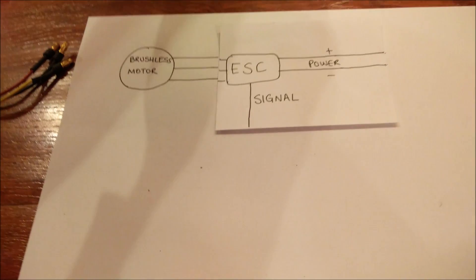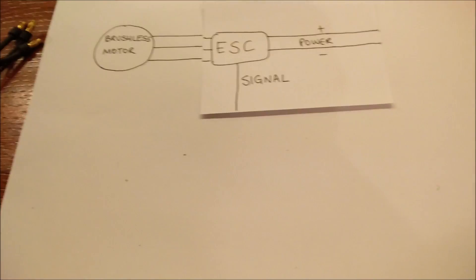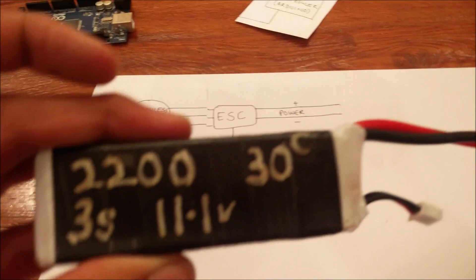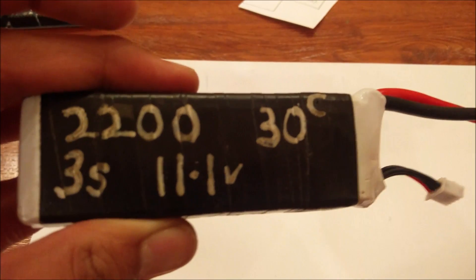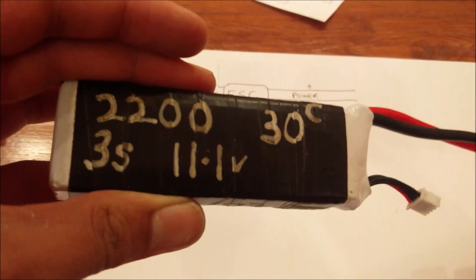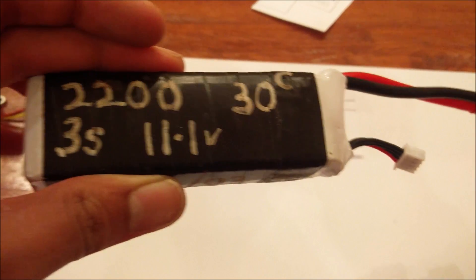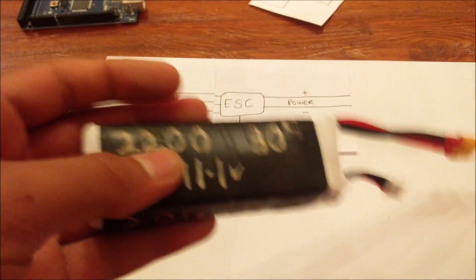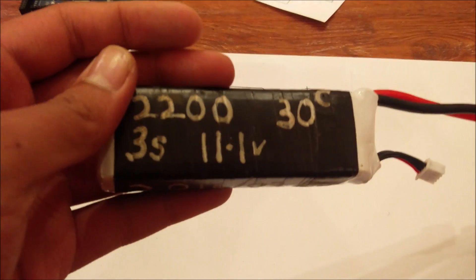Okay, now to power the ESCs we're gonna need a powerful battery. This is the battery I'm using. It's a 2200 milliamp, 30C, 3S, 11.1 volt battery. If you don't know what that means, it's perfectly fine. You can just google these. These are all just stats on the battery itself. This small lightweight battery can keep the drone in the sky for about 20 minutes.